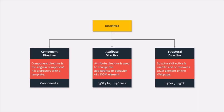Then we have structural directive, which is used to add or remove a DOM element from the web page. For example, ng-for and ng-if are used to add or remove elements from the DOM — they modify the DOM by adding or removing elements. So these directives are called structural directives. In this lecture, we are going to learn how to create an attribute directive.